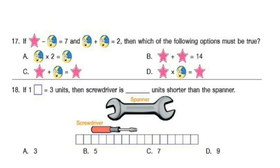Question 17. If star minus smiley is 7 and smiley plus smiley is 2, then which of the following options must be true? The correct answer is option D.